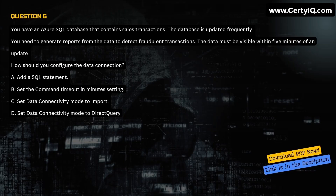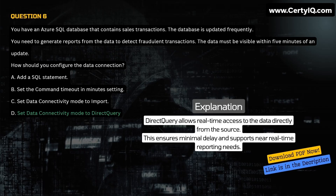Question 6. You have an Azure SQL database that contains sales transactions. The database is updated frequently. You need to generate reports from the data to detect fraudulent transactions. The data must be visible within 5 minutes of an update. How should you configure the data connection? A. Add a SQL statement. B. Set the command timeout and minute setting. C. Set data connectivity mode to Import. D. Set data connectivity mode to Direct Query. Correct answer is D. Explanation: Direct Query allows real-time access to the data directly from the source. This ensures minimal delay and supports near real-time reporting needs.